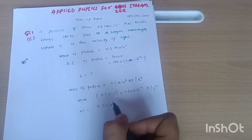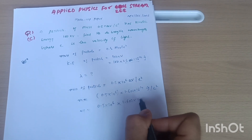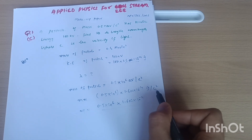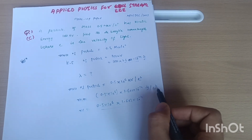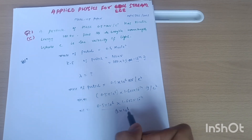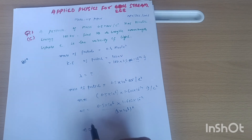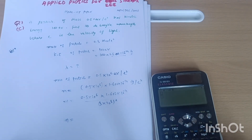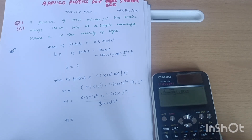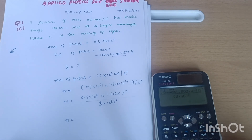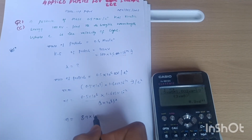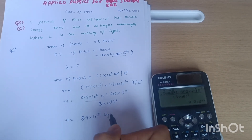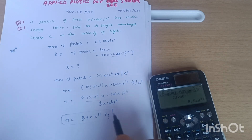So mass m equals 0.5 × 10⁶ × 1.602 × 10⁻¹⁹ divided by c squared, where c is 3 × 10⁸ m/s. Calculating this gives m = 8.9 × 10⁻³¹ kg. So we now have the mass value in kilograms.